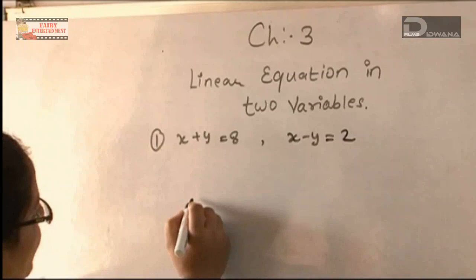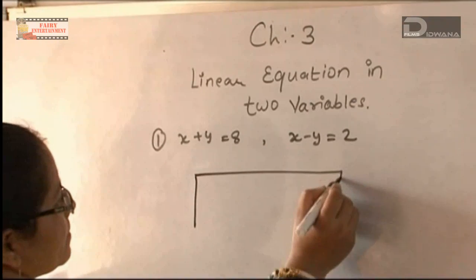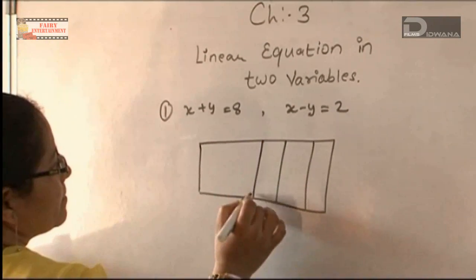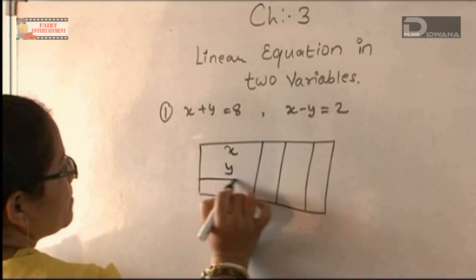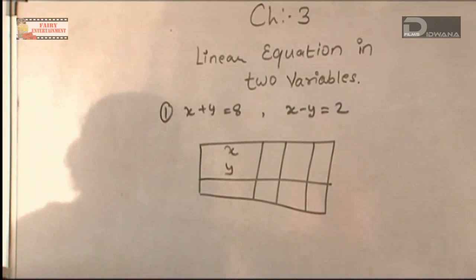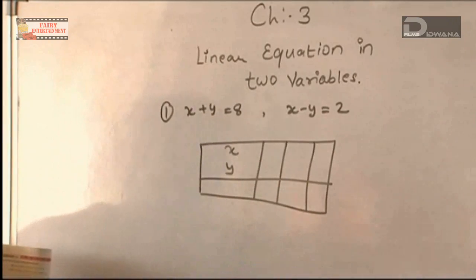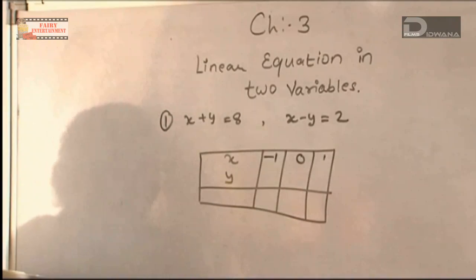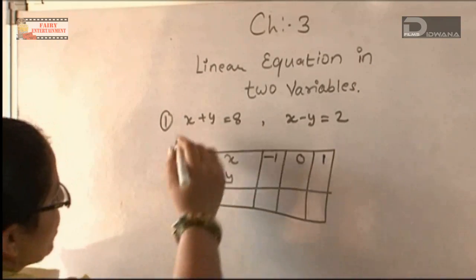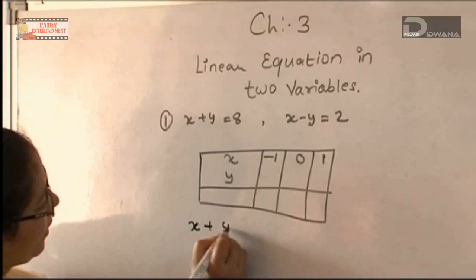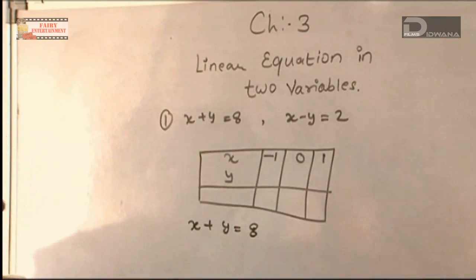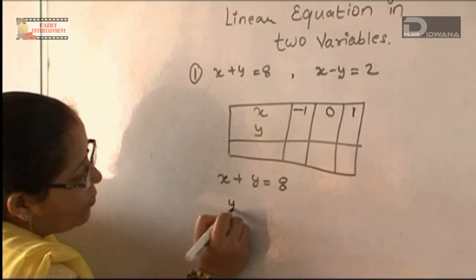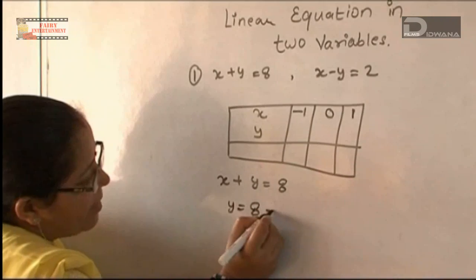We will solve the first equation. We will take values for x by our own choice — we will take smaller values. The x values we take are minus 1, 0, and 1. The first equation is x plus y equal to 8. We substitute the x value into the equation to find the value of y, giving us y equal to 8 minus x.